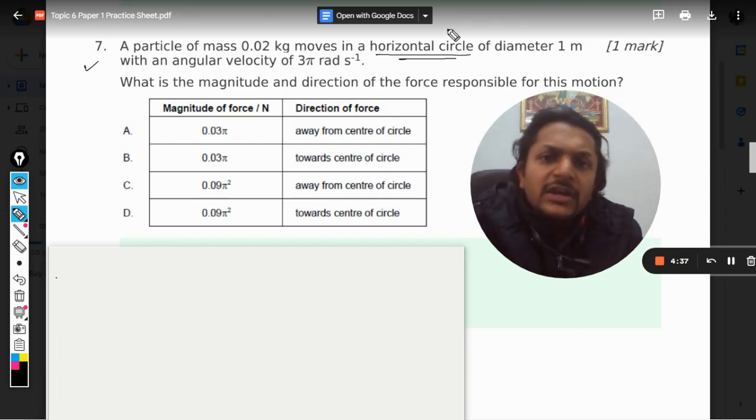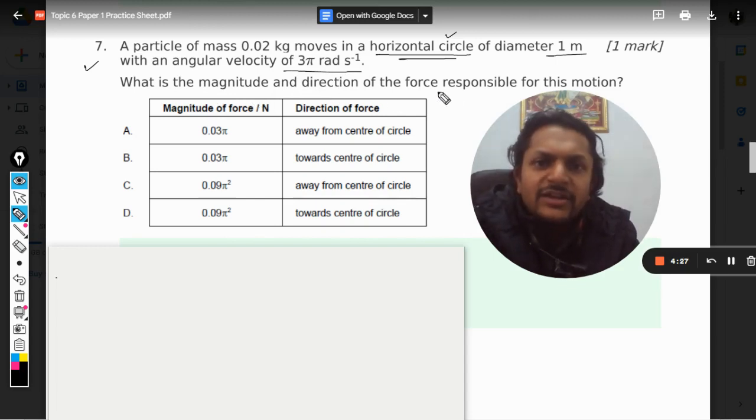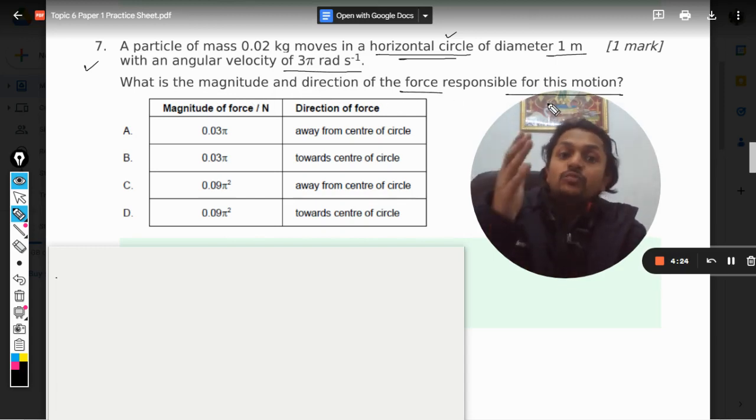This is what is meant by horizontal circle of diameter one meter with an angular velocity of 3 pi radian per second. What is the magnitude and direction of the force responsible for this motion?